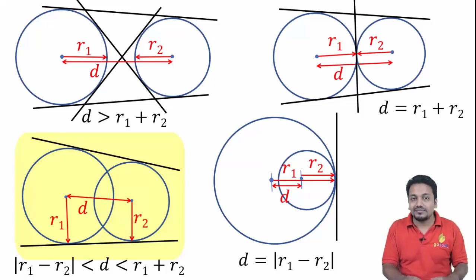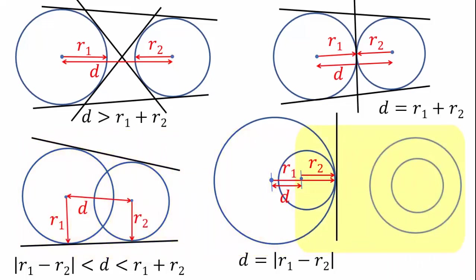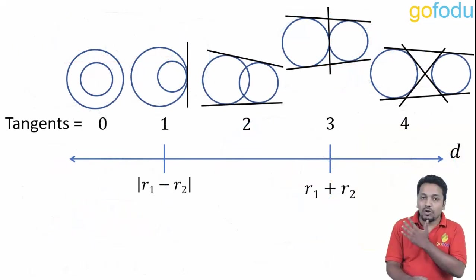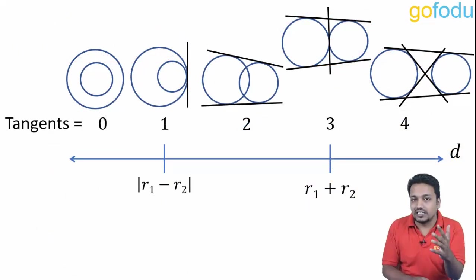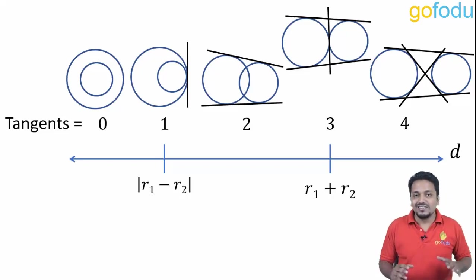Last but not least, if one circle is completely inside the other, there is no common tangent. The condition for that is D should be less than |r1 minus r2|. Here is a summary of the number of tangents and their conditions. Pause the video and go through it once — such an easy way to remember everything.